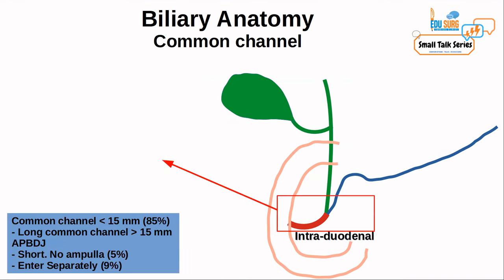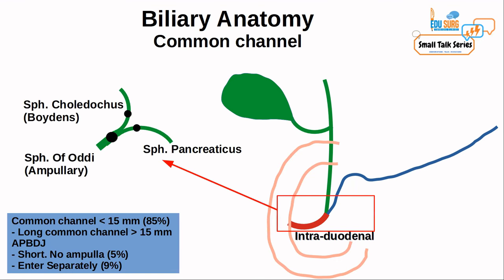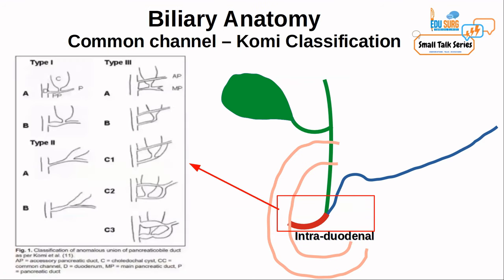When discussing the common channel, remember there are three sphincters in this area: the sphincter pancreaticus to the pancreatic duct, the sphincter of Boyden to the bile duct, and the sphincter of Oddi to the common channel. The sphincter of Lutkens is the sphincter in the cystic duct. Boyden is the sphincter in the common bile duct, and the sphincter of Oddi is the ampullary sphincter — a commonly asked question.